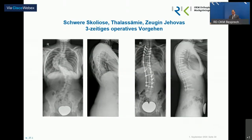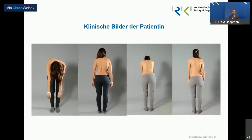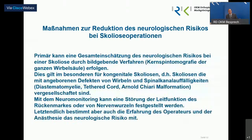Hier ist noch ein Beispiel, wo man zwingend Fremdblutgabe vermeiden musste. Man hat die Operation auf drei verschiedene Schritte aufgeteilt. Das ist zwar aufwendig, aber damit konnte man die Gabe von Fremdblut sicher vermeiden. Nicht jeder will eine dreiteilige Operation, aber in dem Fall ist es so geschehen – und wir konnten nicht nur ein gutes Ergebnis erzielen, sondern haben komplett auf die Gabe von Blut verzichten können.